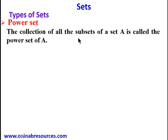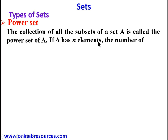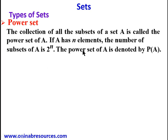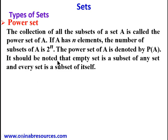We go to power sets. The collection of all the subsets of a set A is called the power set of A. If A has n elements, the number of subsets of A is 2 raised to the power n. For example, if there are 3 elements: 2³ = 8 subsets; if there are 5 elements: 2⁵ = 32 subsets. The power set of A is denoted by P(A). Note that the empty set is a subset of any set and every set is a subset of itself.